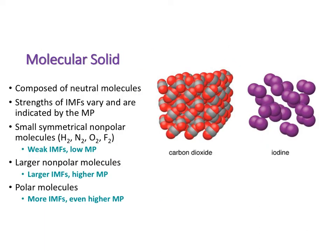Finally, we have regular molecular solids, which are composed of regular molecular compounds — for example, carbon dioxide and iodine. The strengths of their intermolecular forces (IMFs) vary and are indicated by the melting point. Small symmetrical non-polar molecules, such as diatomic molecules like iodine, have weak IMFs, resulting in a low melting point — that's why they're usually a gas at room temperature, because there's nothing strong enough to hold them together.